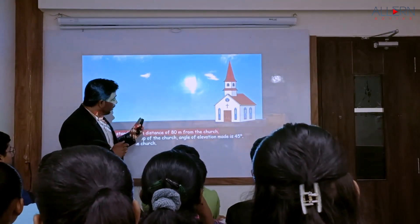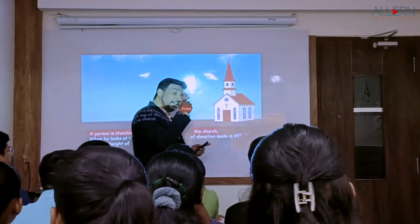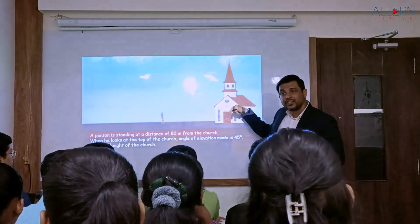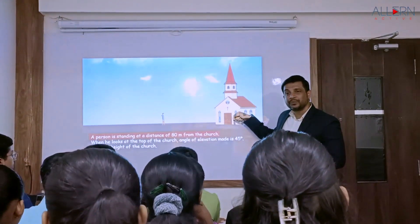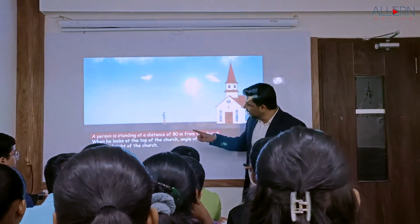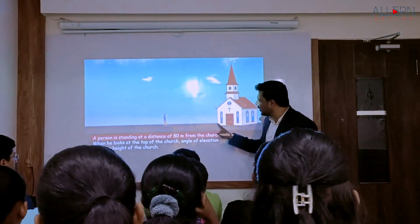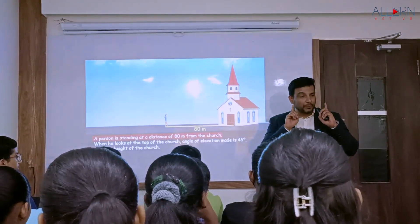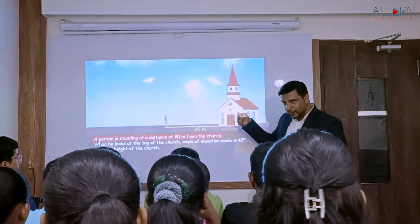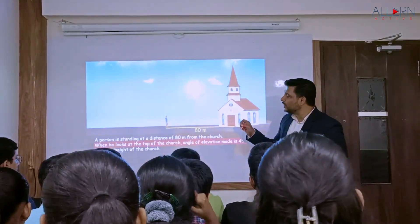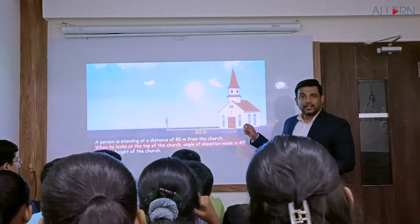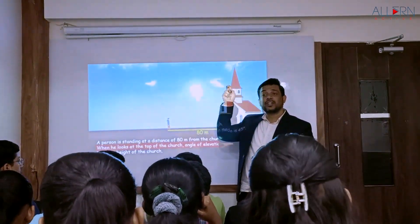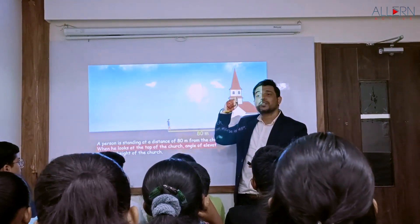Let's have a church and a person. Now the same sentence says the distance between the person and the church is 80 meters - so the distance between this person and the church is 80 meters. That's what we understood from the first sentence. Now when we go to the next one, it says: when he looks at the top of the church - that means the person here is looking at the top of the church. The person is the observer.